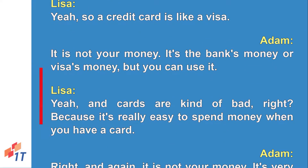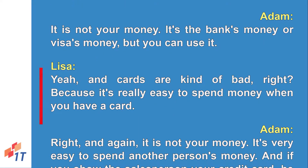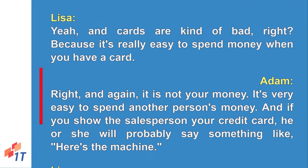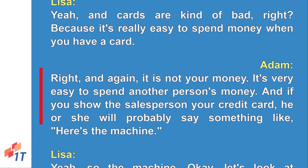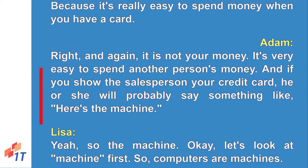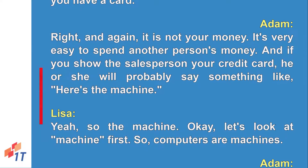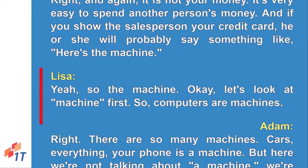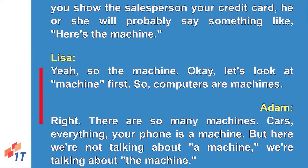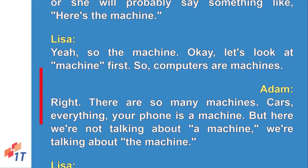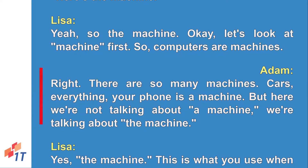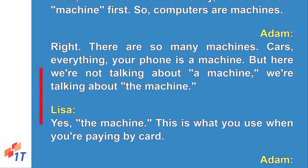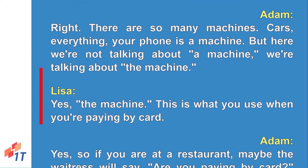Cards are kind of bad because it's really easy to spend money when you have a card — it's very easy to spend another person's money. If you show the salesperson your credit card, he or she will probably say 'Here's the machine.' Computers are machines, cars are machines, your phone is a machine, but here 'the machine' means the specific device you use when paying by card.